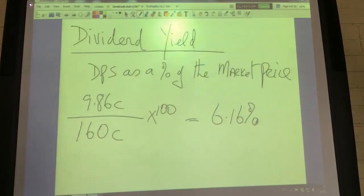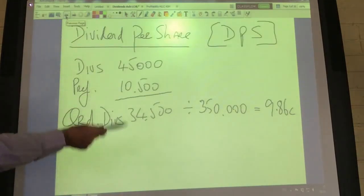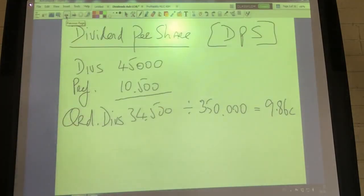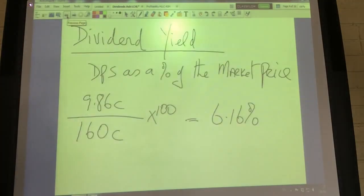Dividend on its own, like 9.86 cents, doesn't mean much unless you compare it with last year's dividend per share. You really do have to express it as a percentage of how much the shares are worth, which is dividend yield. Next we should look at the ability of the company's profits to cover the dividend.